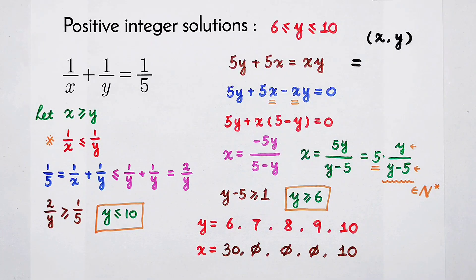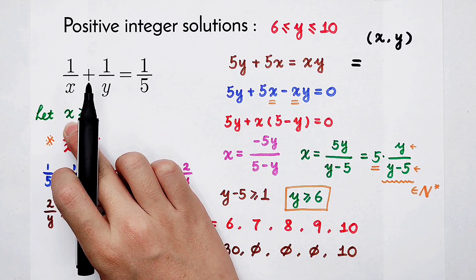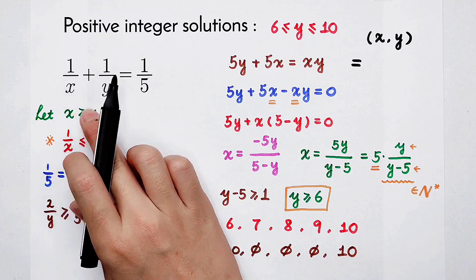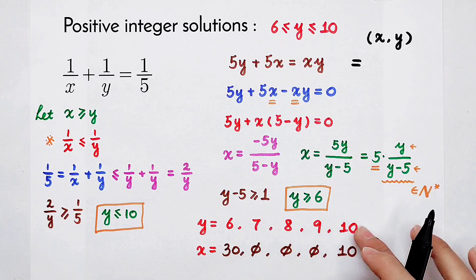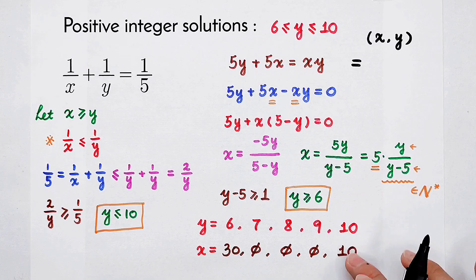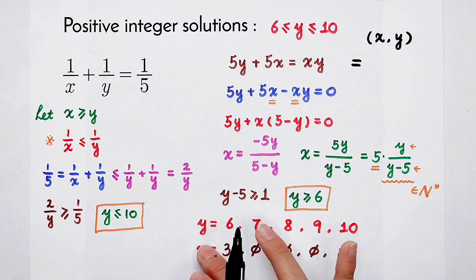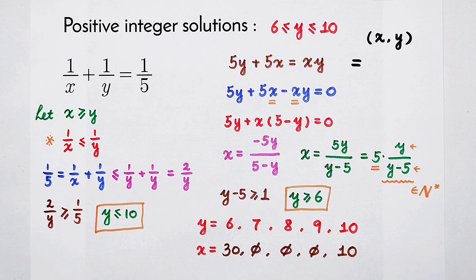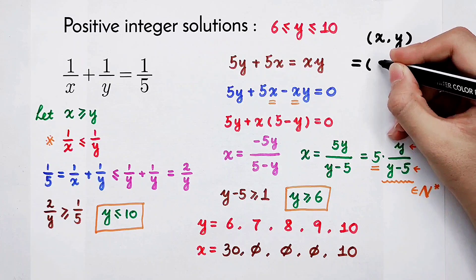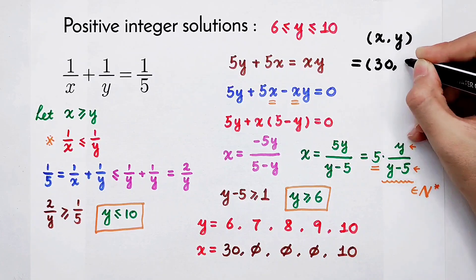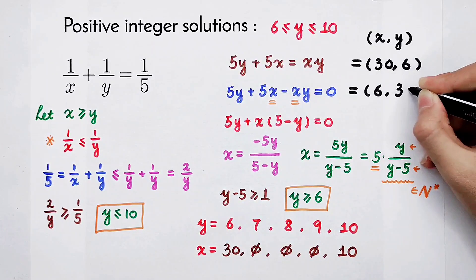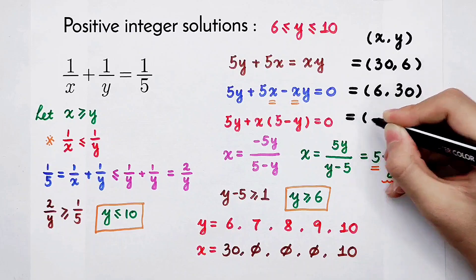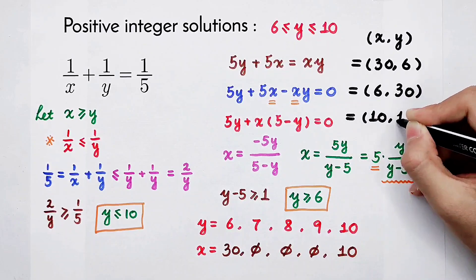Because the left side is a cyclic symmetry formula, x can also be smaller or equal to y. So x can also be 6 and y is 30. But when y is 10 and x is 10, they have the same value, so you don't have to write it again. The solutions are: (x, y) = (30, 6), or (6, 30), or (10, 10).